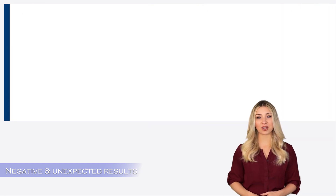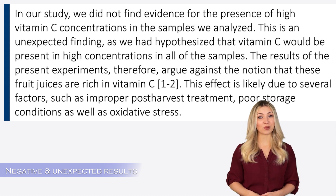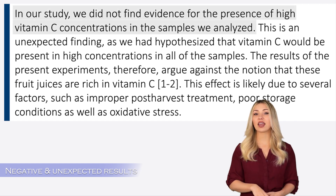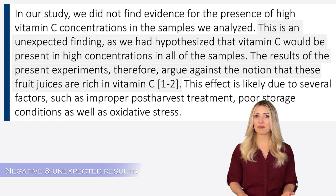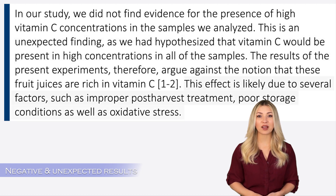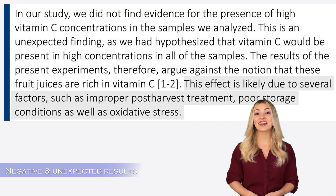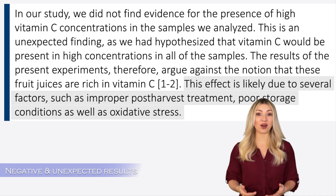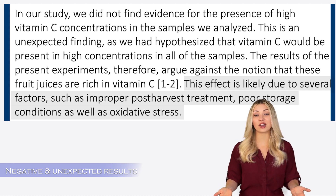Let's look at another example from a health sciences research paper. The authors are saying that they did not find any evidence of vitamin C in any of the samples in the experiment. This contradicts their hypothesis and some of the previous findings in the literature. Now the authors are explaining why they think they got the result. They think this might be due to various factors such as improper treatment, poor storage, oxidative stress, etc. As you can see, the authors are honest about their findings and are trying to provide a rational explanation to justify their results.